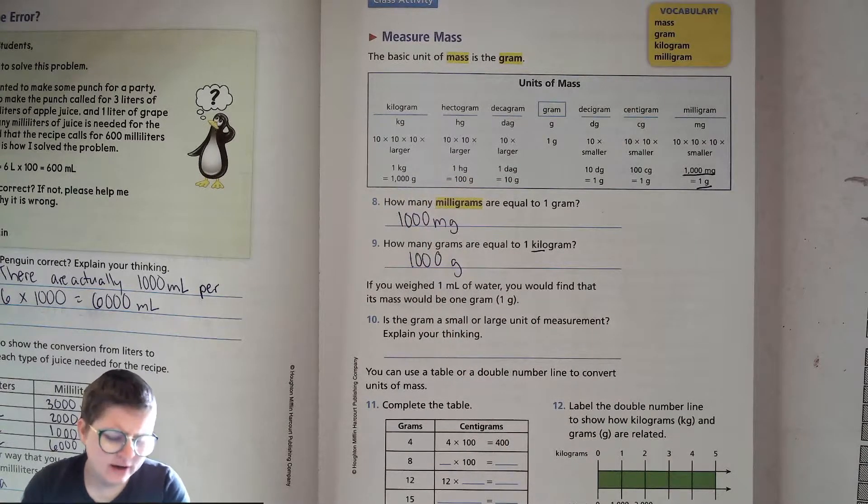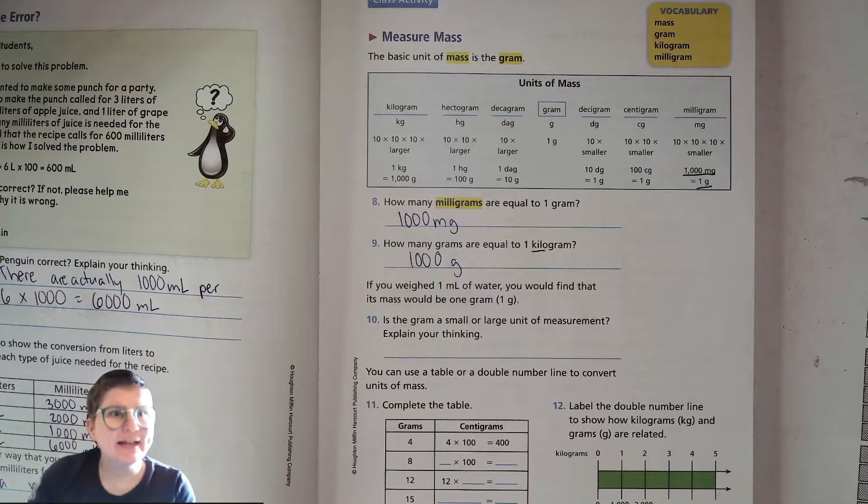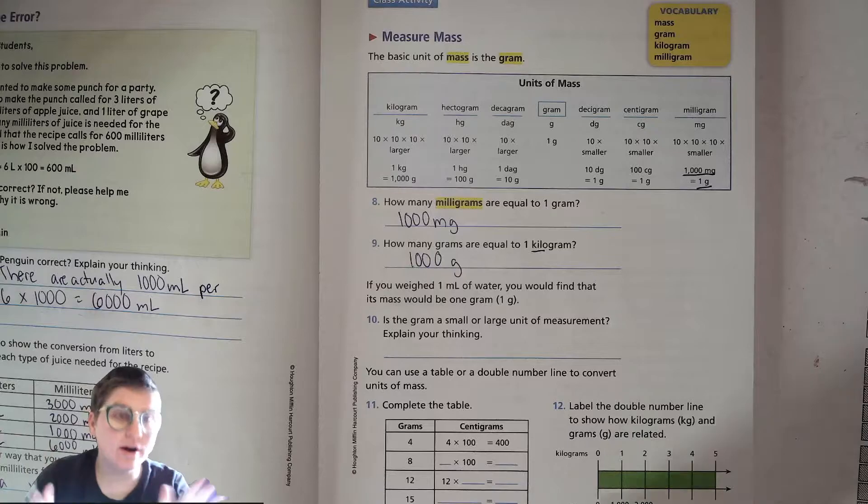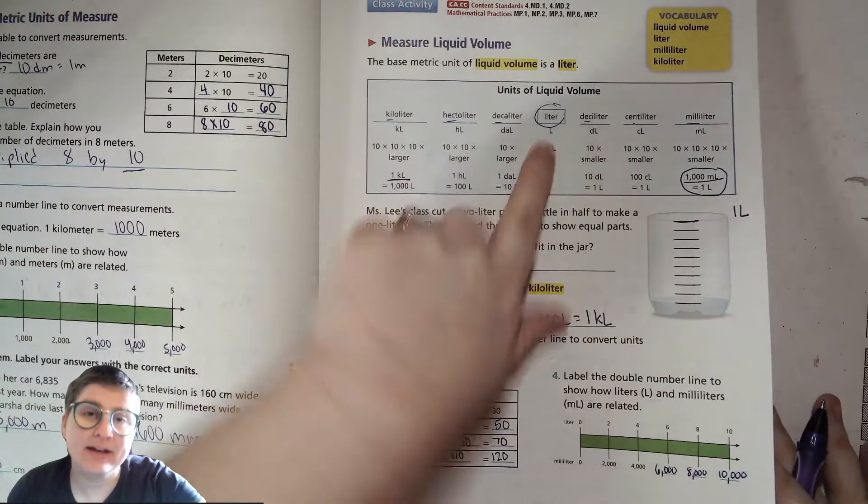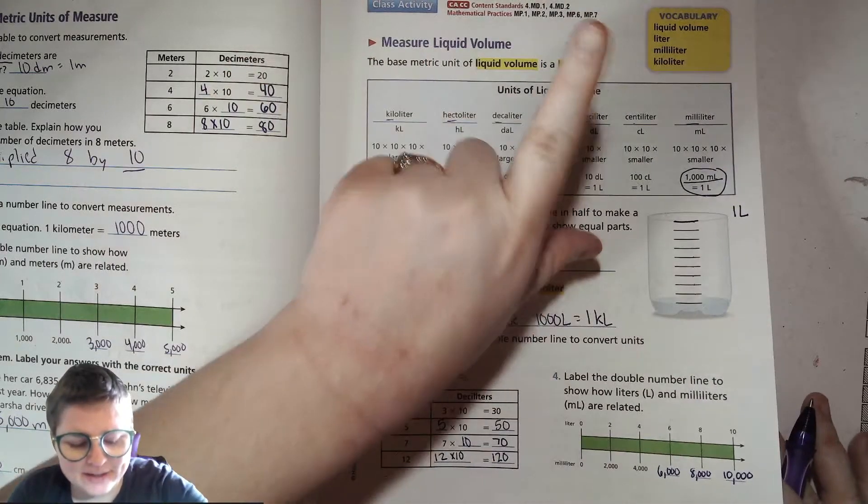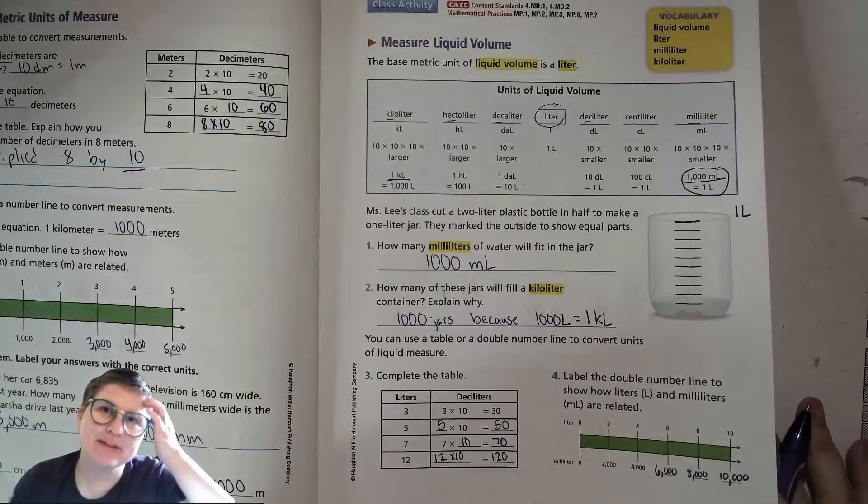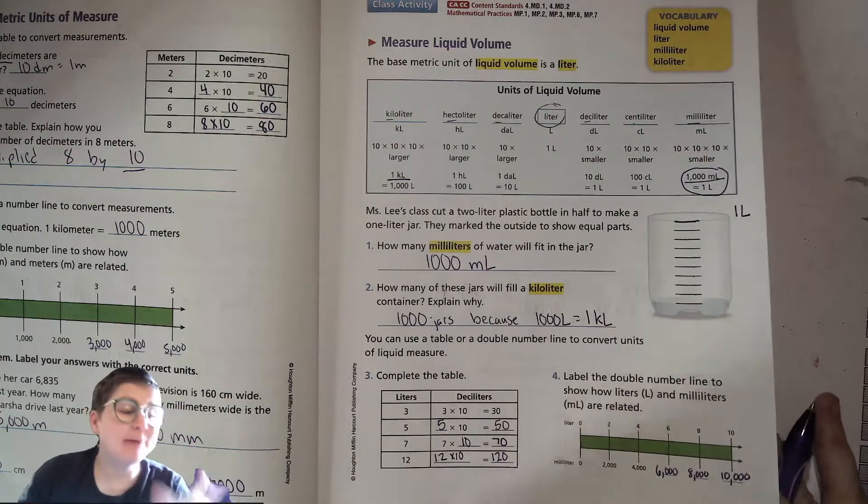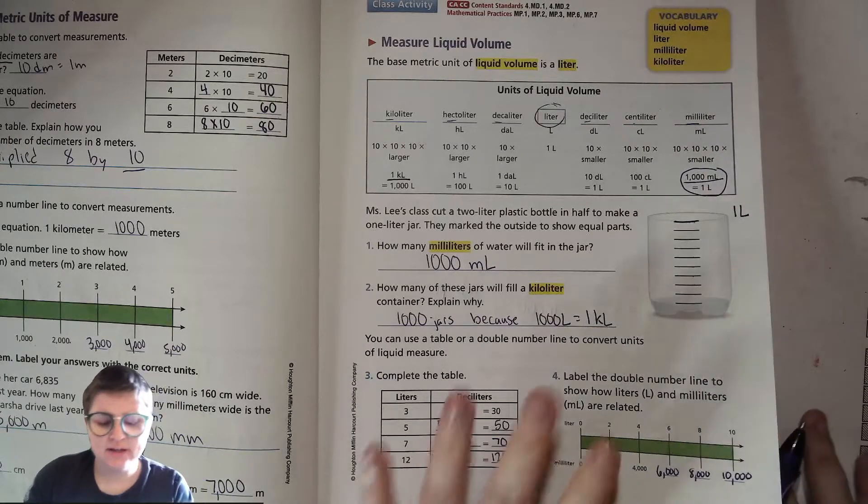If you weighed one milliliter of water, you would find that its mass is equal to one gram. Isn't that neat? Now that's only true for water because water is based on that. Like that's where it came from. But the liter thing, the milliliter and liters, it's liquid volume, how much space a liquid is taking up, not how much it weighs.